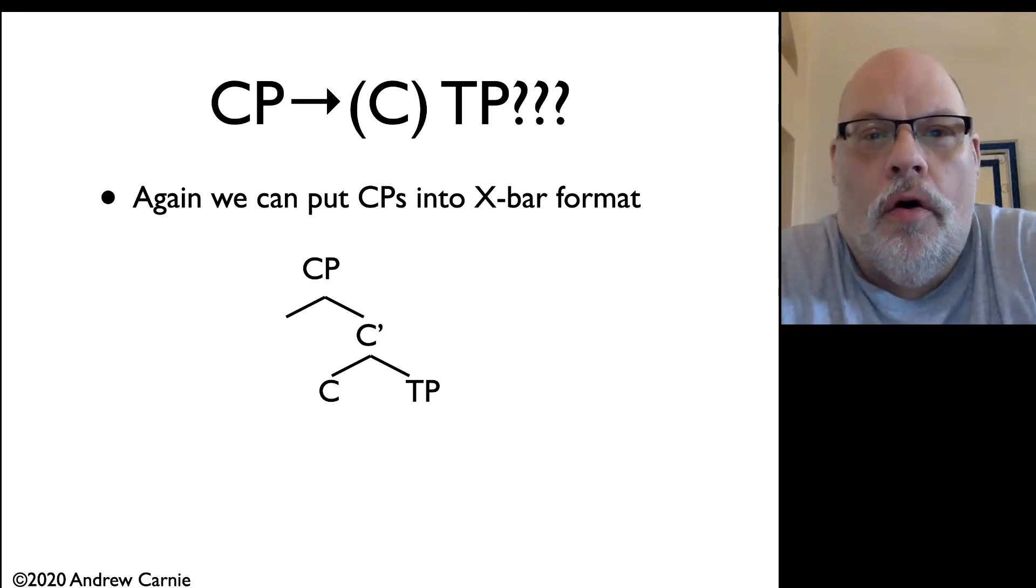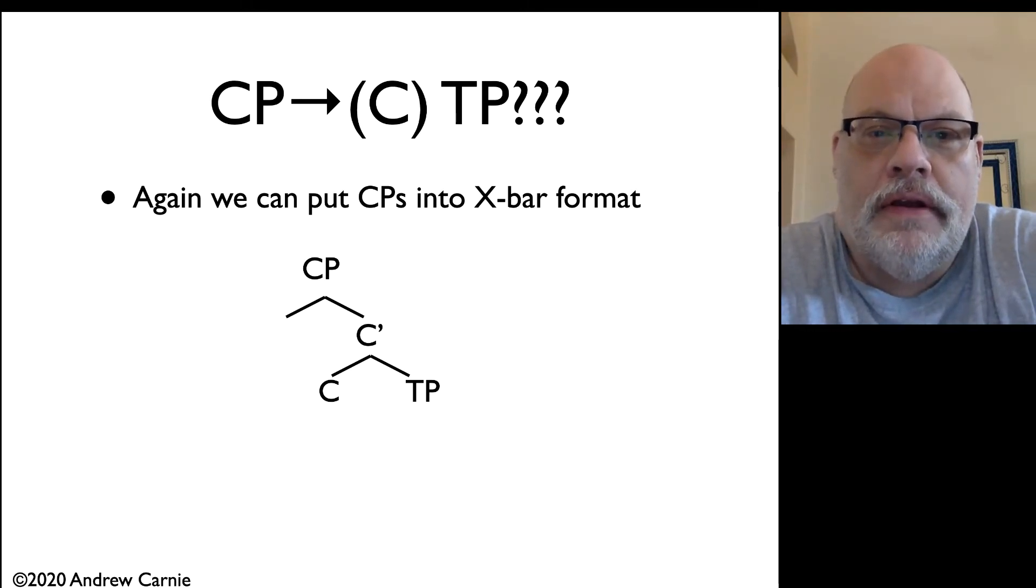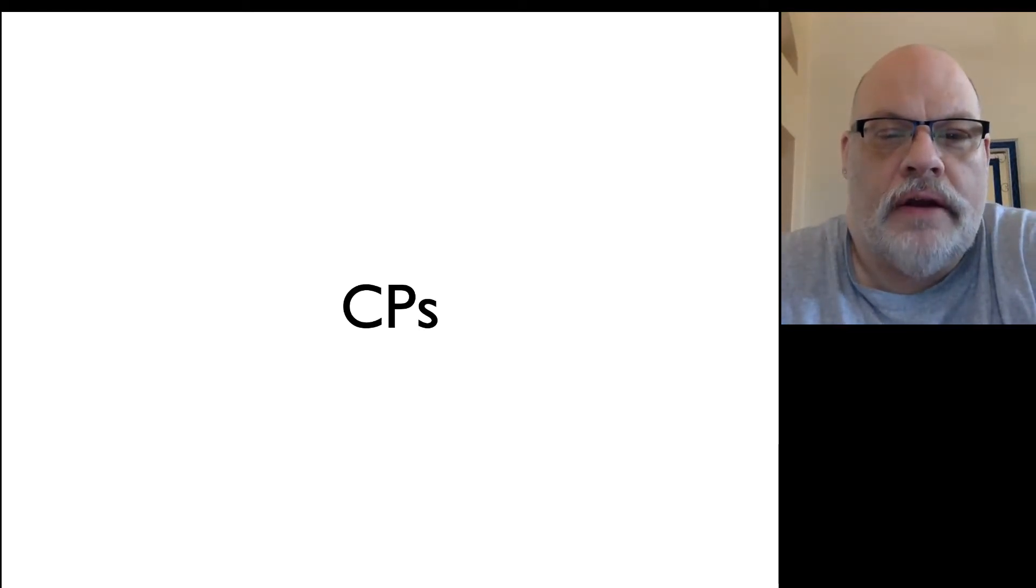In our old phrase structure rule system, we had CP goes to optional C followed by TP. There's a number of problems with this. The first is that the head is optional, and the second is there's no bar level. But it's a relatively trivial matter to put CPs into x-bar format, as in the tree you see right here.